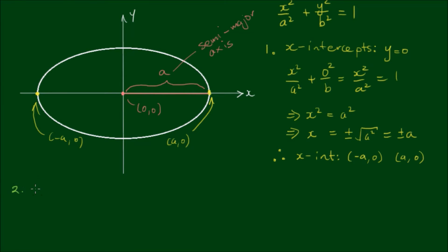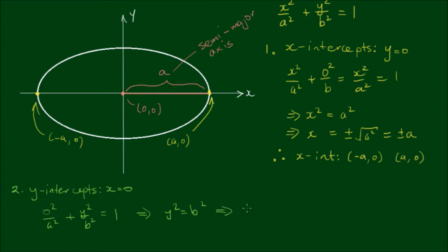Secondly, let's determine the y-intercepts. These occur at x equals 0. So with the equation of the ellipse we have 0 squared on a squared plus y squared on b squared is equal to 1. This implies that y squared is equal to b squared, which implies that y is equal to plus or minus b. So therefore the y-intercepts are located at coordinates (0, b) and (0, -b).